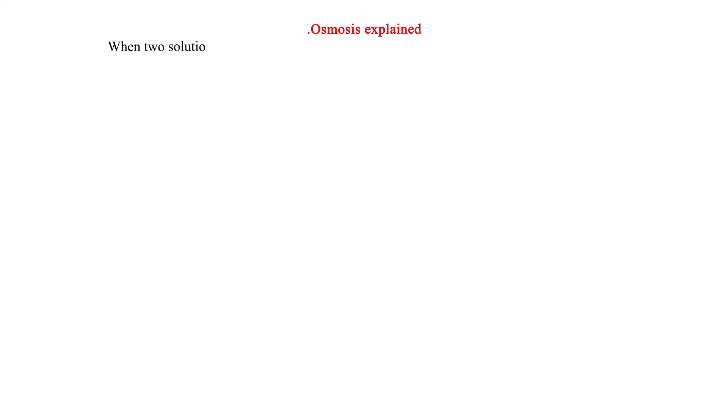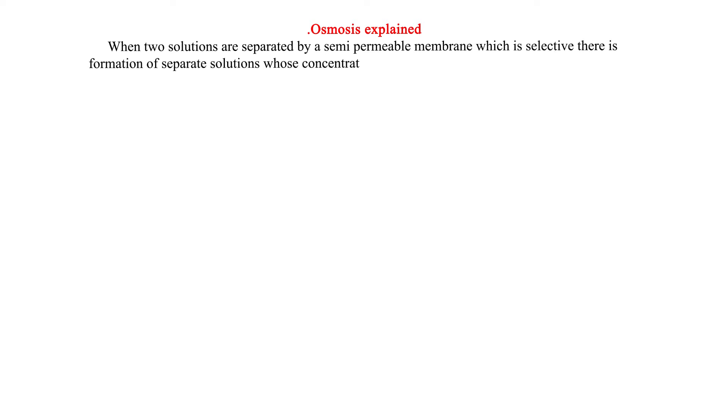What is osmosis explained? When two solutions are separated by a semi-permeable membrane, which is selective, there is formation of separate solutions whose concentration may be equal, low, or high, as discussed below.